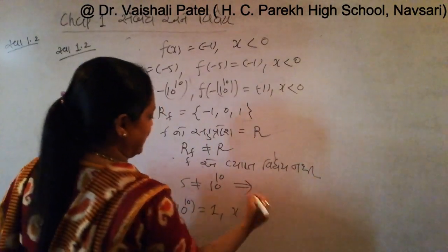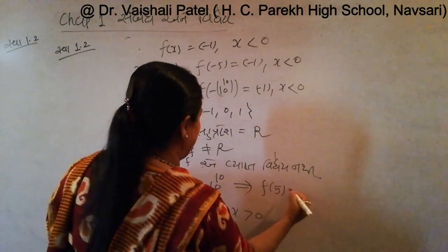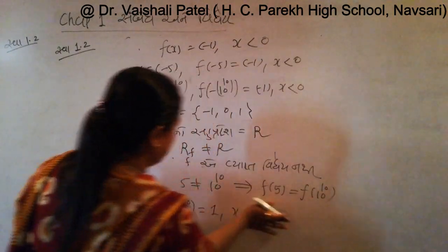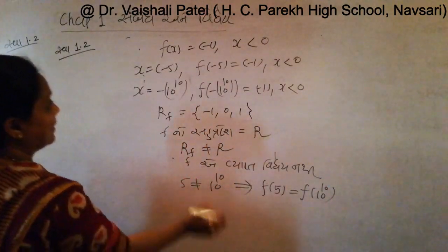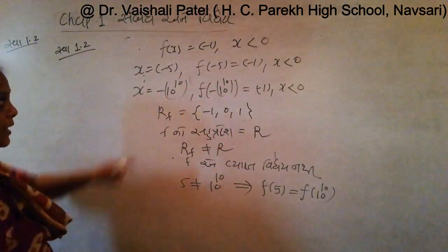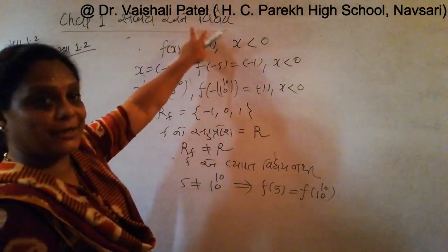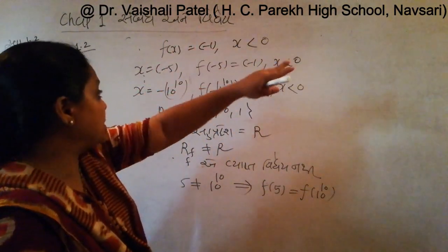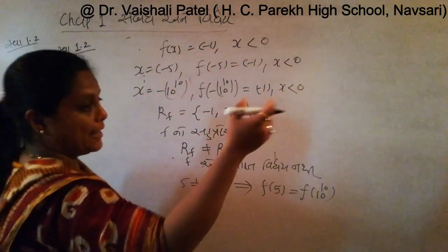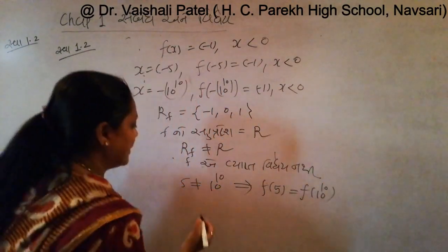f of minus 10 raised to 10 is equal to f of 10 raised to 10. Minus 5 is not equal to minus 10 raised to 10, which implies f of minus 5 is equal to f of minus 10 raised to 10.